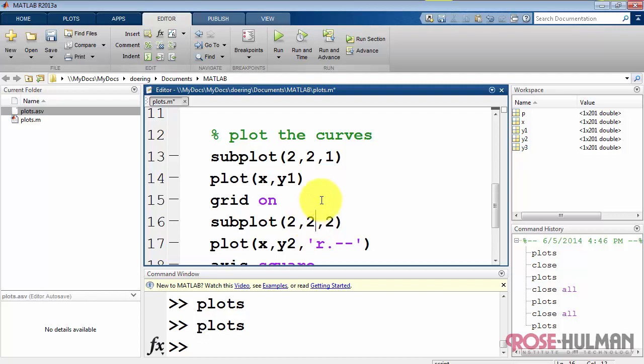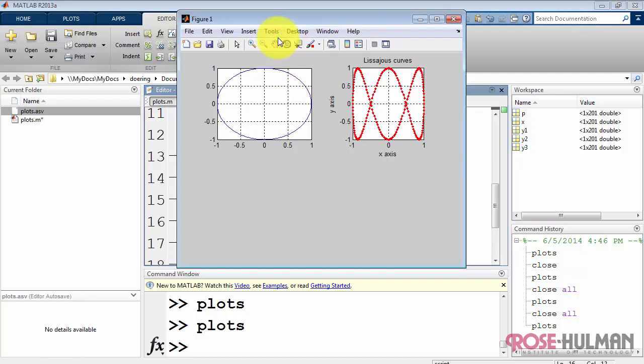Let me change this to two rows and two columns. Now we have plot one, two, three, and four.